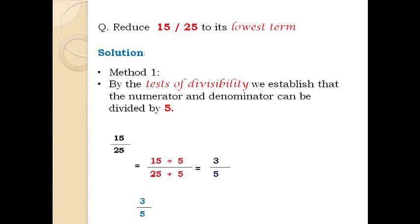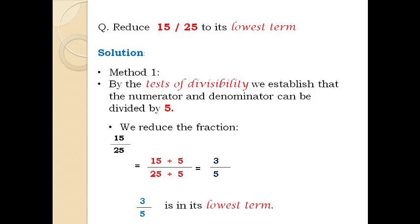Question: reduce 15 over 25 to its lowest term. Method 1: by the test of divisibility, we establish that the numerator and denominator can be divided by 5. Any number with 5 or 0 in the unit place is divisible by 5. Both 15 and 25 have 5 in the unit place, so both are divisible by 5. Dividing 15 over 25 by 5 gives 3 over 5. Since 3 over 5 cannot be reduced any further, 3 over 5 is in its lowest term.